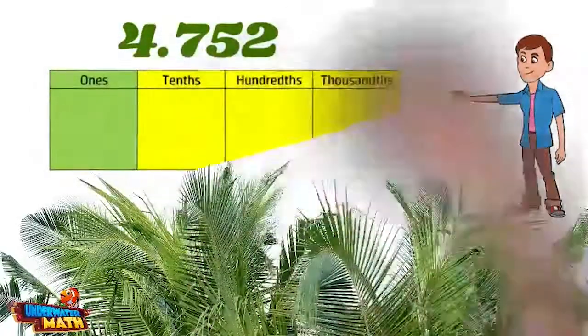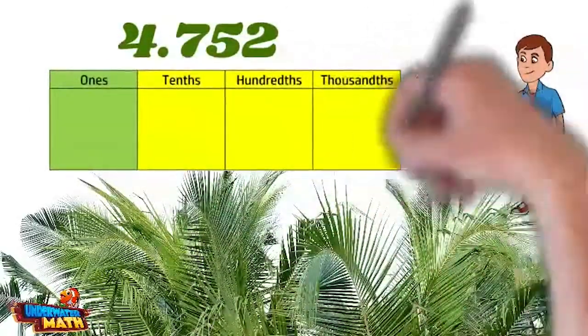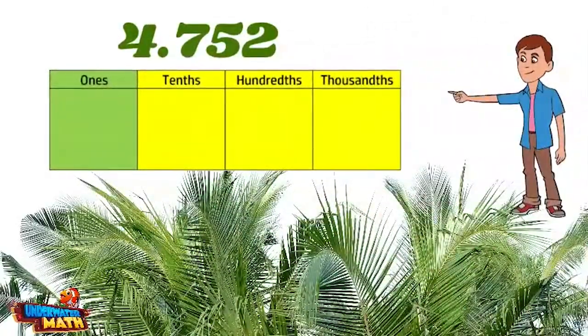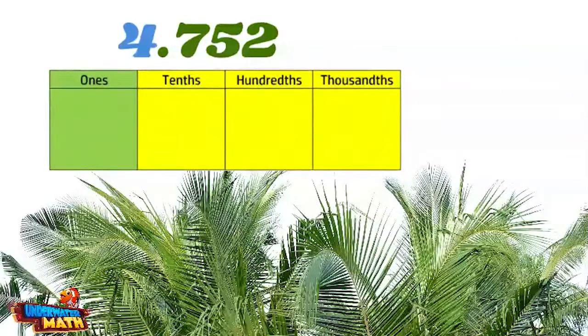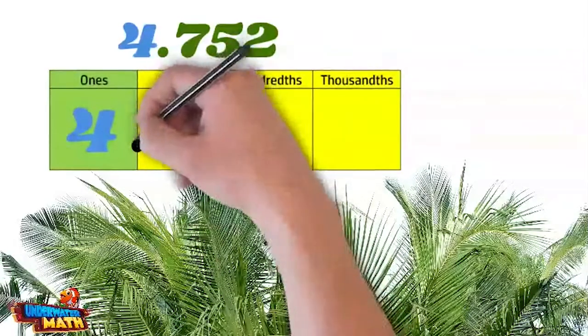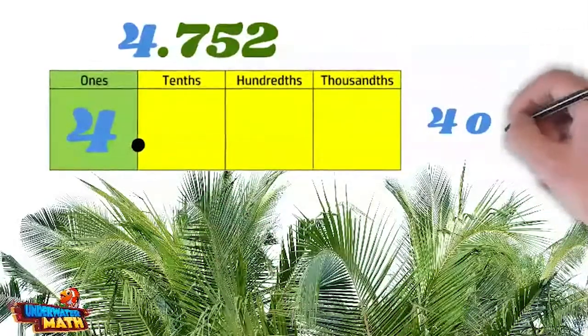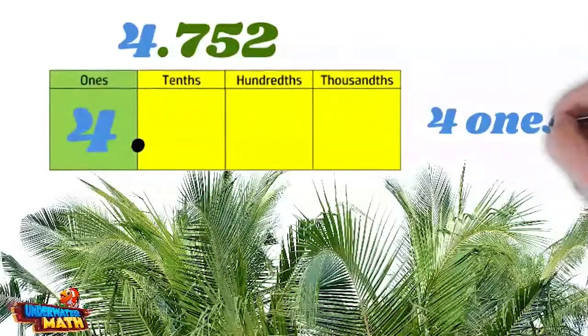A place value chart can help you line up the numbers and find their values. The ones place is easy — since there is a four in the ones place, it has a value of four.